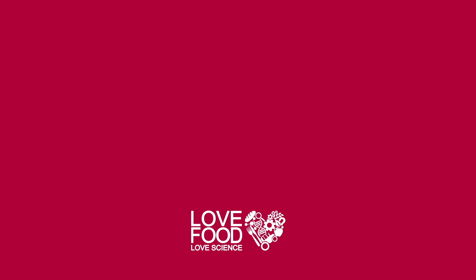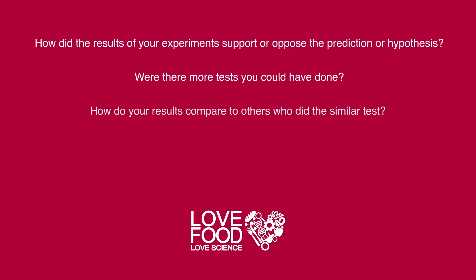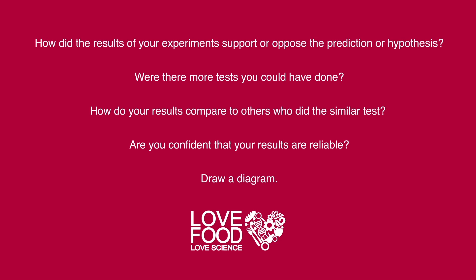If your report was all about finding the best starch to thicken a sauce or a soup, you would have to justify your findings and give reasons for your success or failures of ingredients. How did the results of your experiment support or oppose your prediction or hypothesis? Were there some more tests you could have done? How do your results compare to those who have done similar tests? Are you confident that your results are reliable? Starch is quite tricky to explain, so you can always draw a diagram on how the molecules work to thicken a liquid.